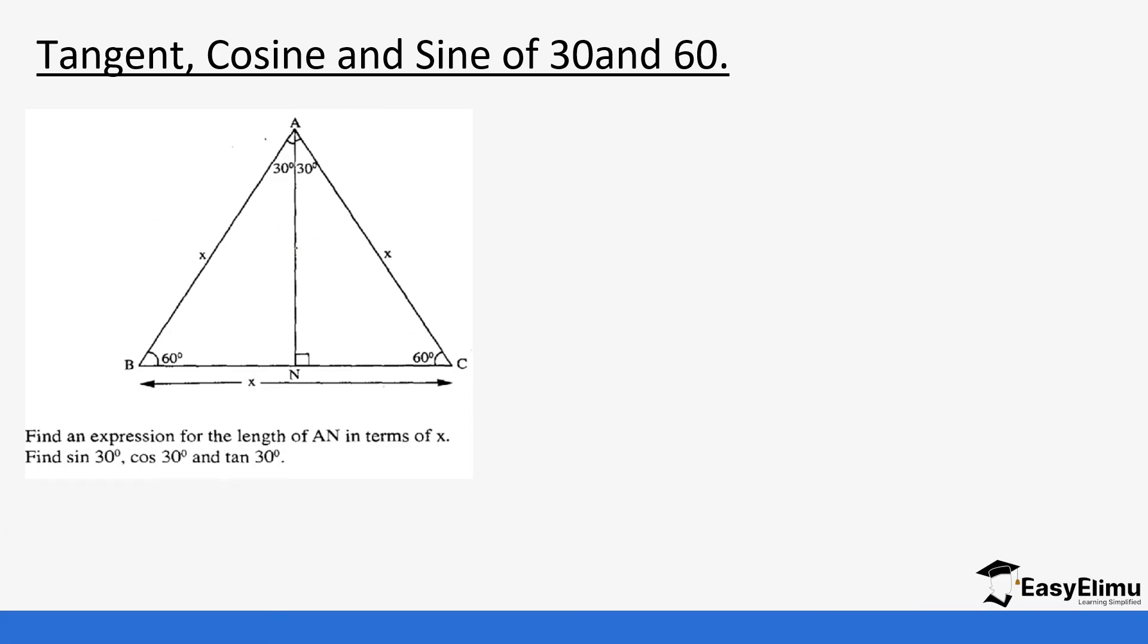in this triangle ABC to point N, then we are dividing our angle which was 60 degrees into 30. That's the reason why we are talking about 30 degrees and 60 degrees because you can get the same from the same right angle triangle.